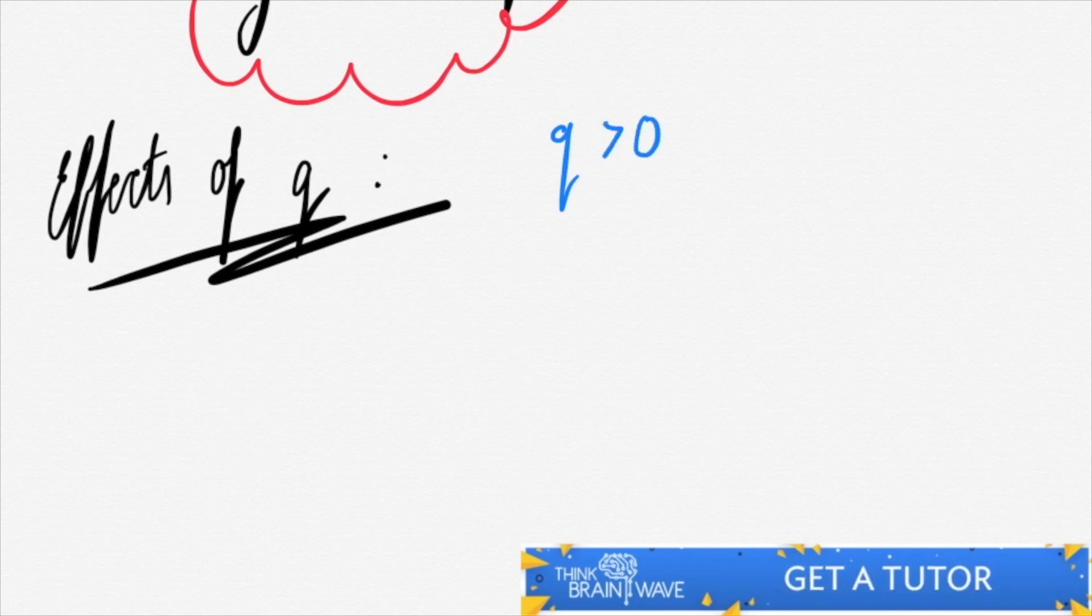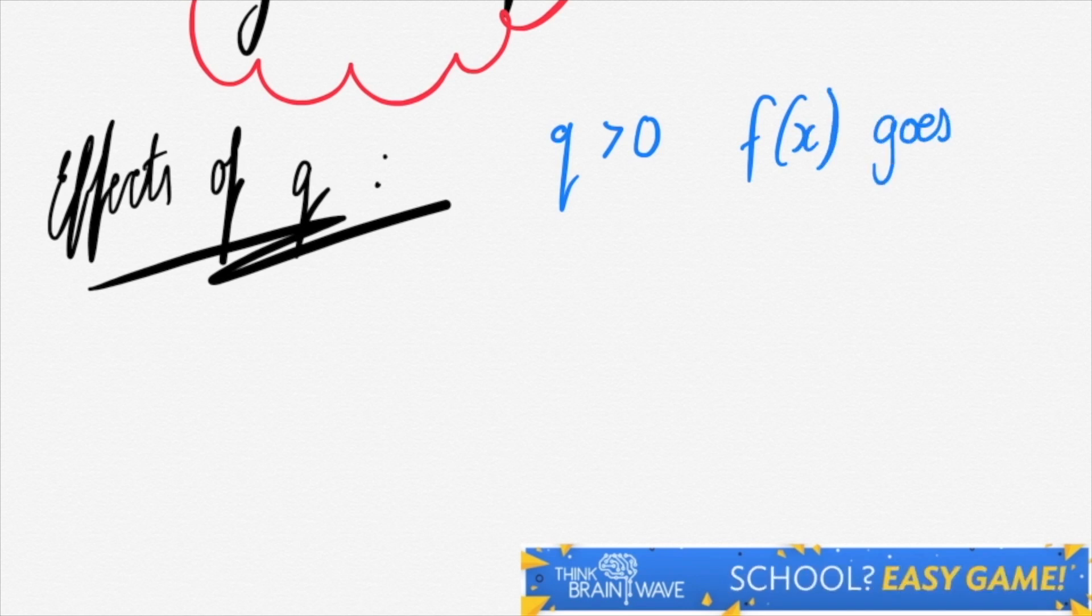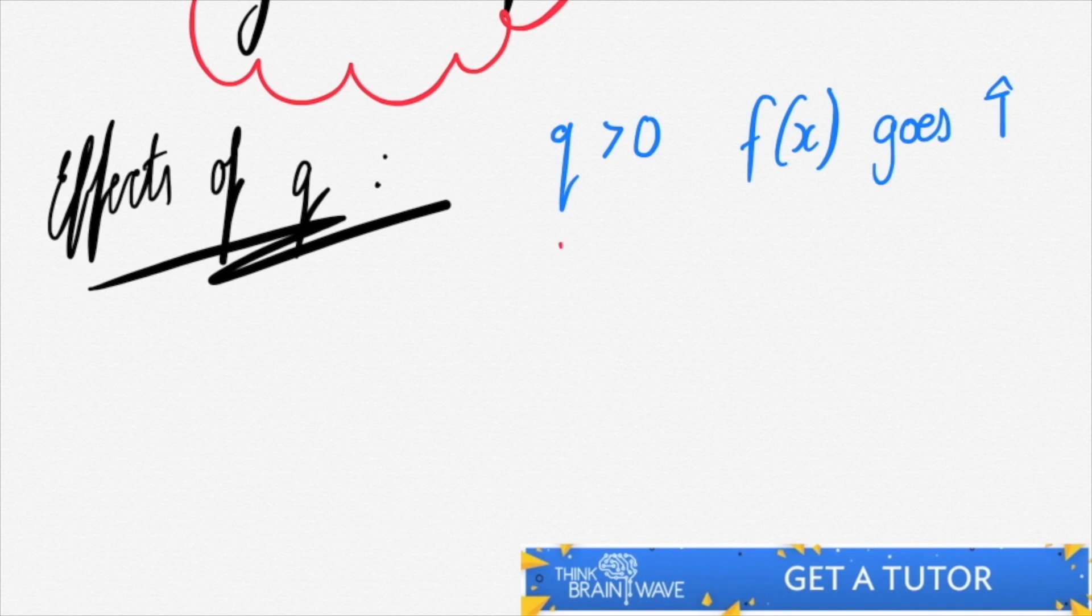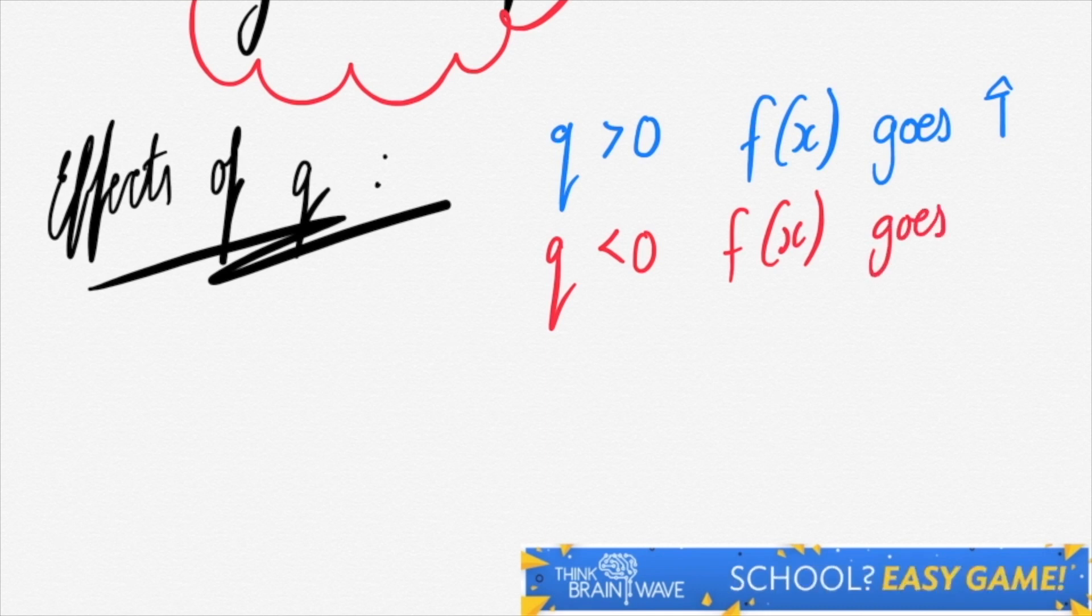When q is greater than 0, which means it's positive, the function f(x) goes up. Alternatively, when q is less than 0, meaning it's negative, f(x) goes down, as in it shifts downwards or upwards.